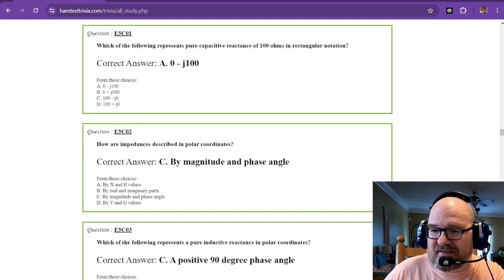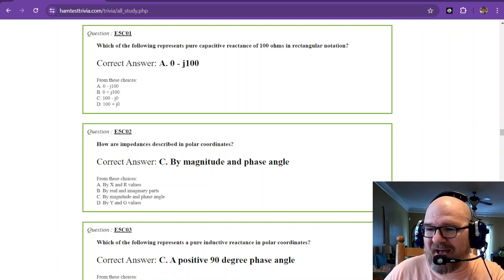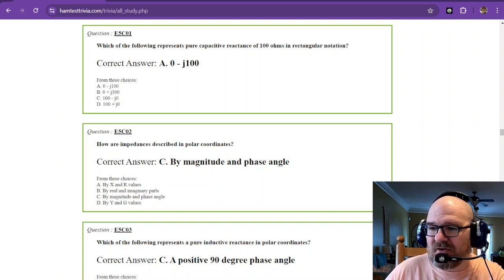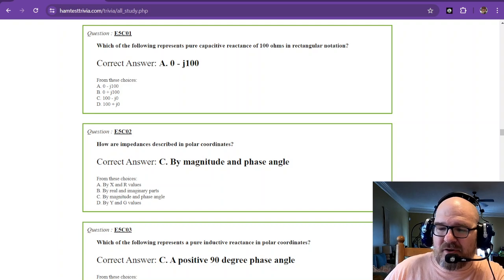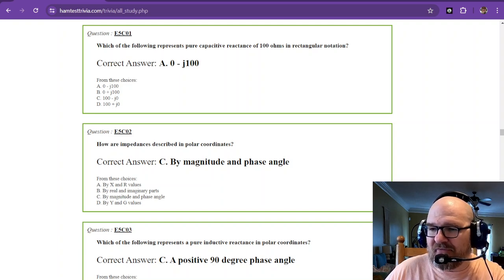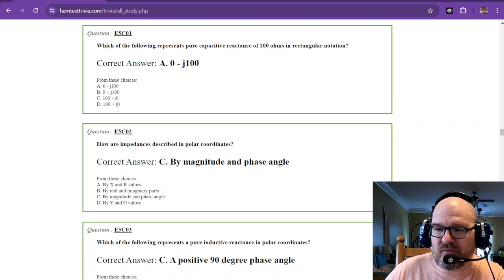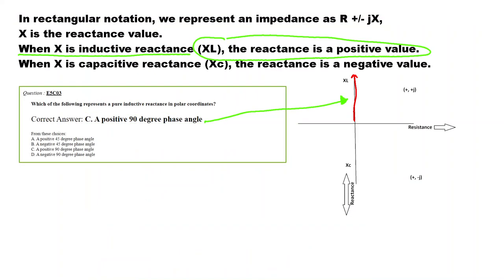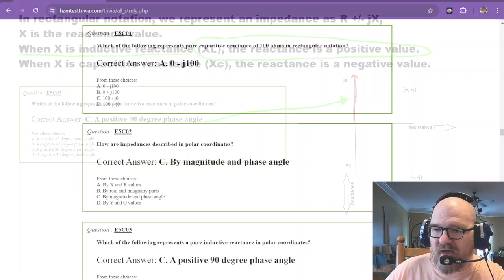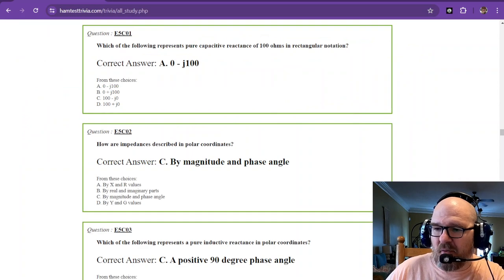So the first question is asking, which of the following represents pure capacitive reactance of 100 ohms in rectangular notation. So that zero is the resistive portion, so there's no resistance. So it's purely 100 ohms of capacitive. Now there is a rule, so we're going to transition over here really quick. In rectangular notation, when X is an inductive reactance, the reactance is a positive value. So if it was inductive, it would be positive. Capacitive is going to be negative, so it would be resistance minus that capacitive reactance. So that is the answer, 0 minus J100.